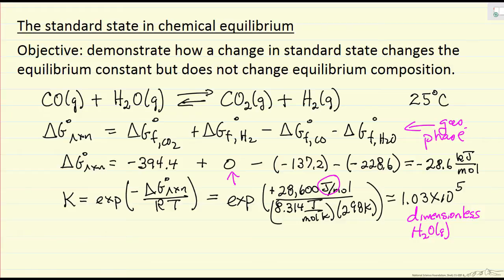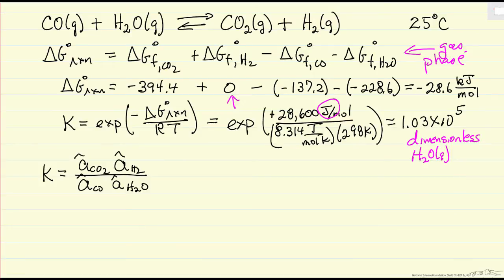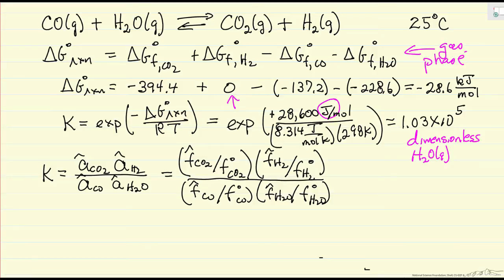We can use the equilibrium constant to calculate equilibrium compositions, and we're just going to look at it in terms of pressures. I've written the equilibrium constant in terms of activities — products divided by reactants — and the stoichiometric coefficients are all one in this case. The hat notation indicates activity in a mixture, and the activity is a ratio of fugacities. For CO₂, it's the fugacity of CO₂ in the equilibrium mixture divided by the pure component fugacity — in this case the ideal gas at standard conditions, one bar at 25°C — and then we have similar terms for the other activities. The equilibrium constant is now written in terms of fugacities, and we can substitute in terms of pressures.